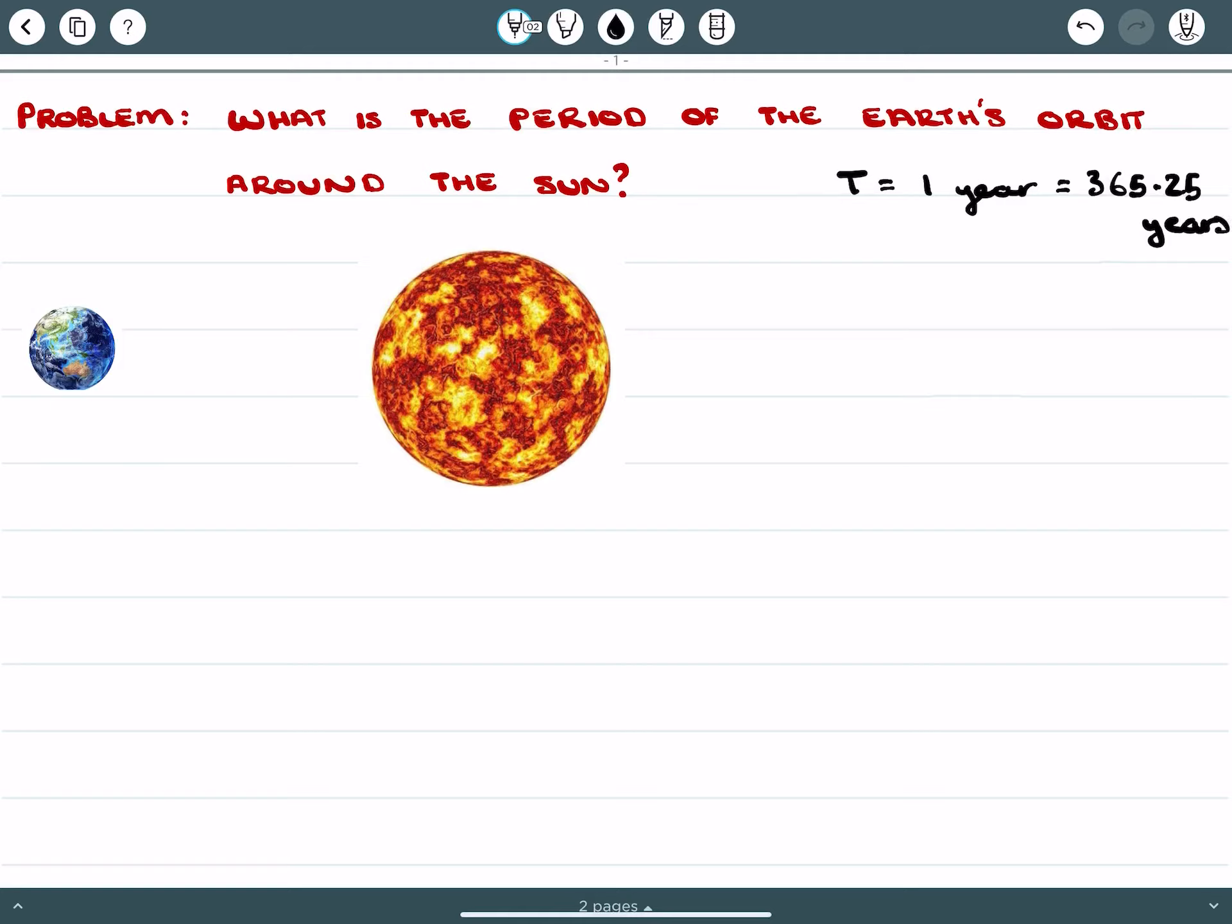So what we're going to do is we're going to explore this. Now we need to know a couple of characteristics or a couple of values for the system itself. So the first value that we need to know is the mass of the Sun, and we know from our information that the mass of the Sun is given as 1.989 times 10 to the 30 kilograms.